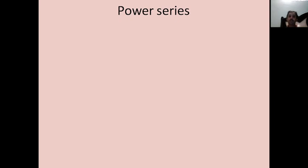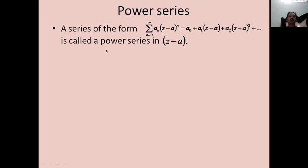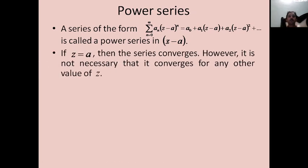We will now move on to the definition of a power series. A series of the form sigma a_n (z - a)^n = a_0 + a_1(z - a) + a_2(z - a)² + ... is called a power series in (z - a). If we choose z = a, the series obviously converges; however, it is not necessary that the series converges for any other value of z.